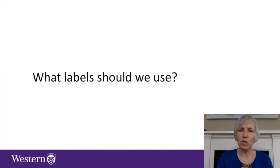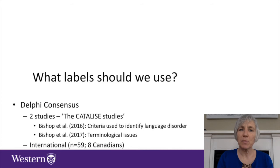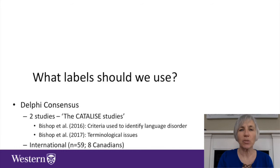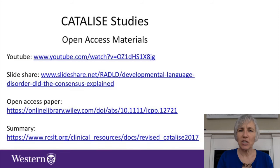So if we're moving towards more consistently using labels, then what labels would we use? Well, recently there have been two studies that addressed this question specifically. They're called the CATALES studies, and there's lots of information available about them. These were survey studies that looked at a Delphi consensus process involving 59 international experts, eight of whom were Canadian. They dealt with criteria used to identify language disorders and also terminological issues. It's the terminological issues that I'm going to highlight in this video. There are summaries on YouTube, slide shares, and the papers themselves — the second paper was open access.